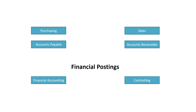These financial postings are usually split into two main types. Financial accounting – to be used for external reporting to shareholders and the general public. And controlling, or management accounting – to be used for internal reporting.